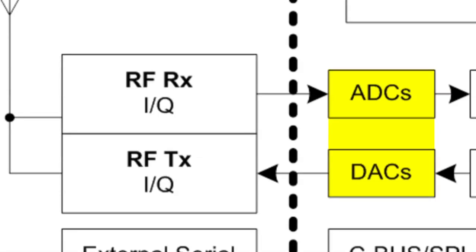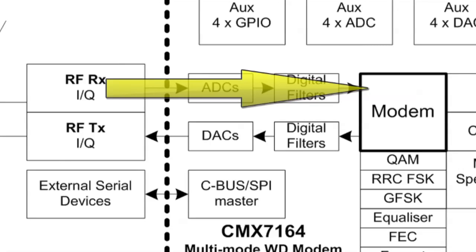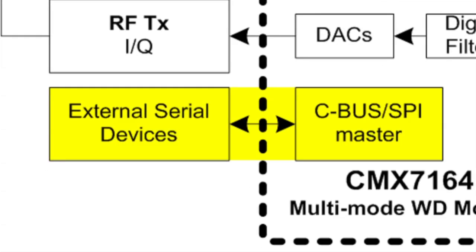The radio interface codec allows direct connection to the transmitter and receiver. The transmit path provides offset and gain controls to trim the external IQ modulator. The receive path includes an automatic gain control function, a wide dynamic range ADC, and automatic corrections for carrier frequency error, received signal DC offset error, and phase and amplitude error. The CMX7164 can pass commands and data to other SPI compatible devices, and this frees up I/O lines on your microcontroller.